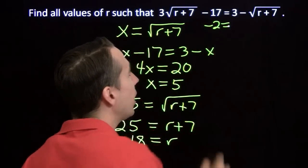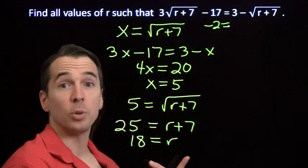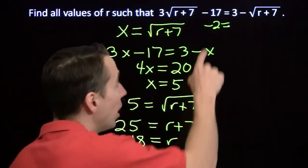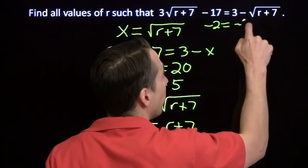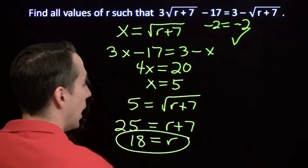Alright, let's see what we get on the other side. Square root of, put our 18 in, 18 plus 7 is 25. Square root of 25 is 5. 3 minus 5 is negative 2. It checks out. And we got that one right.